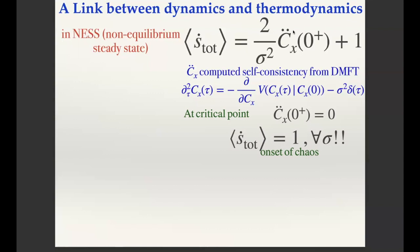The nicest feature of the formula is that at the critical point — the onset of chaos between fixed point and chaos — the second derivative of the autocorrelation function vanishes. Plugging this into the formula, the entropy production equals one (a constant), independent of the noise level. So right at the critical point, the entropy production rate is insensitive to noise. This is counter-intuitive and comes purely from the math; it's not obvious physically.